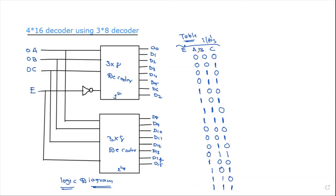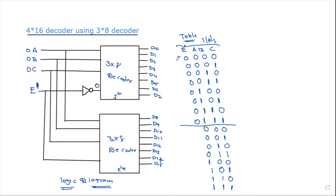I will show you all 16 outputs. When the enable pin is high, the first decoder is active. The first decoder handles outputs 0 through 7. When the enable pin condition is satisfied, the first decoder produces outputs 1, 2, 3, 4, 5, 6, 7, 8.